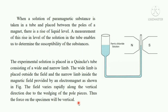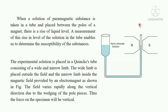When a solution of a paramagnetic substance is taken in a tube and placed between the poles of a magnet, there is a rise in the liquid level, because the paramagnetic substance tends to move in the direction of the magnetic field. A measurement of this rise in the level of the solution enables us to determine the susceptibility of the substance. In our experiment, the ferric chloride solution is placed in the Quinke's tube, and the narrow limb is kept within the magnetic field. The magnetic field provided by the electromagnet varies rapidly along the vertical direction due to the wedging of the poles, causing a rise in the liquid level when the current is switched on.